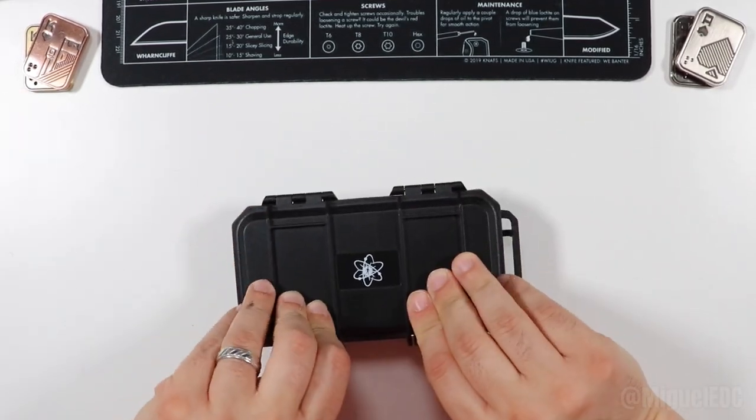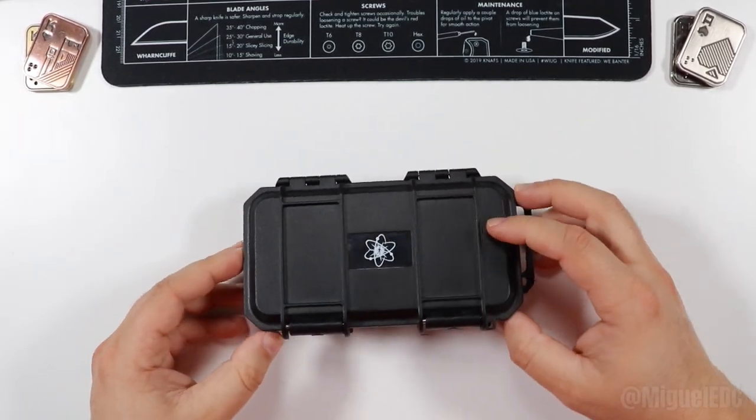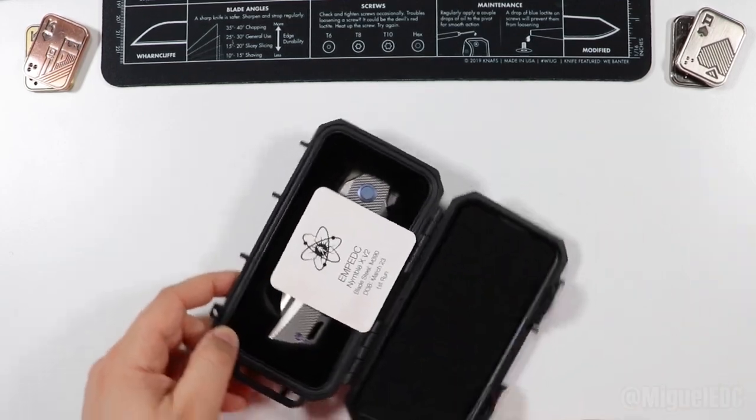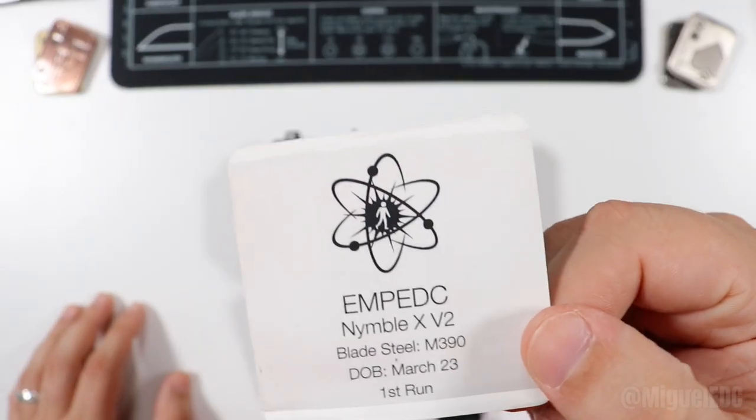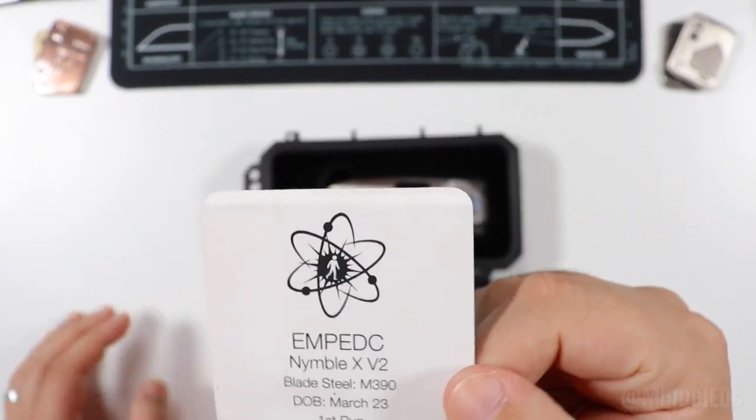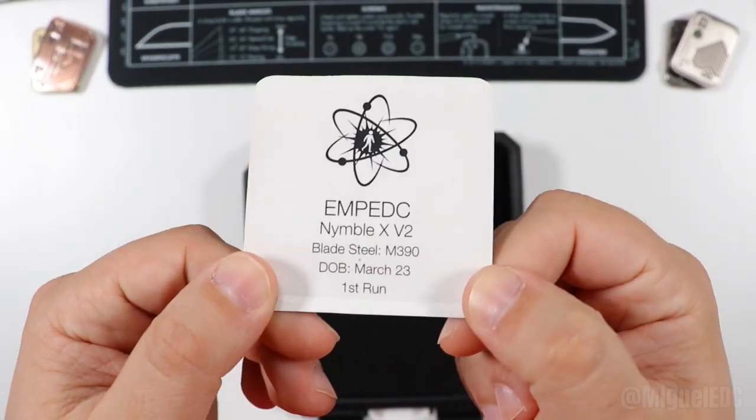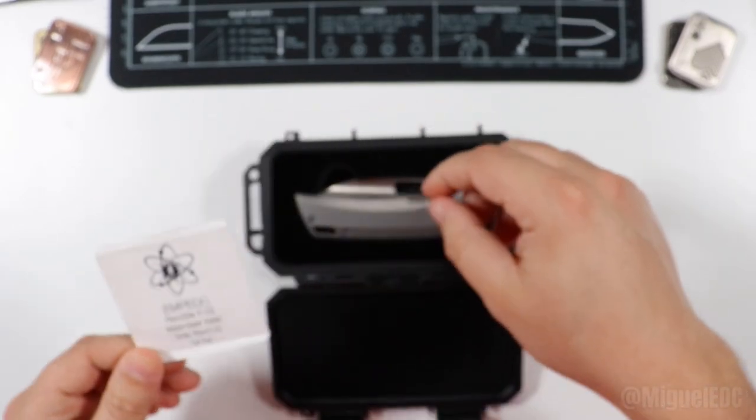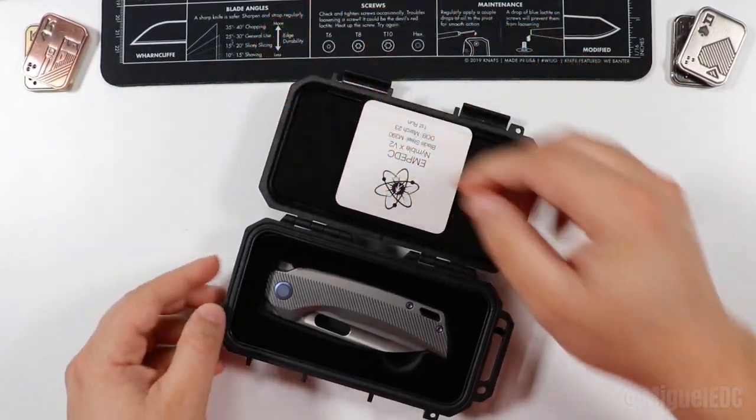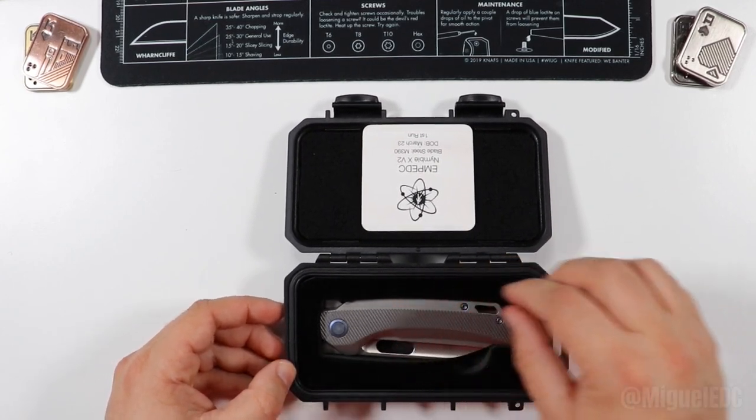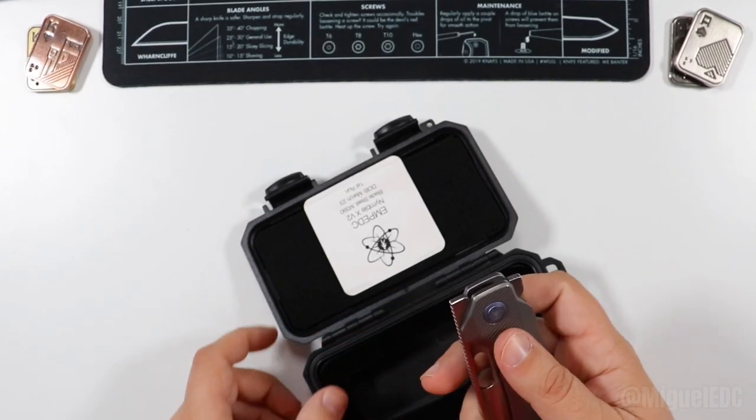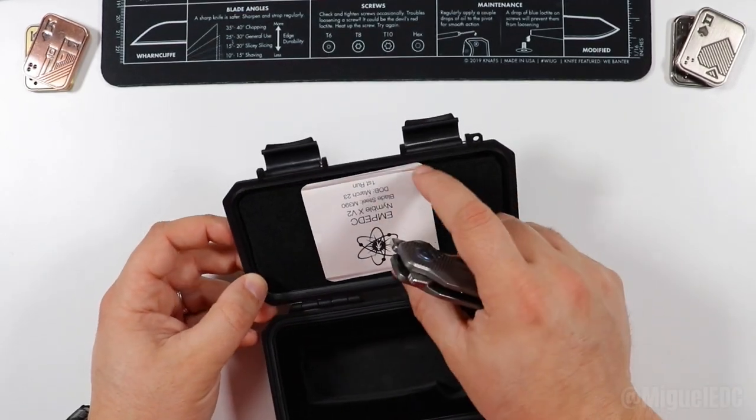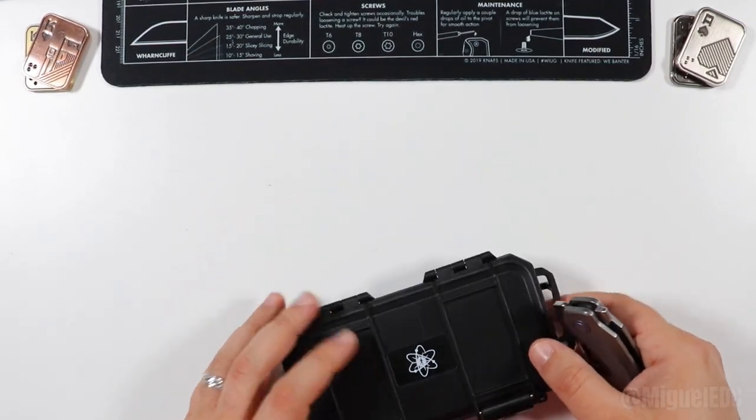So without further ado, open this guy up and here it is - the EMP EDC Nimble V2 with M390 steel. This one is from the first run back in March 2023. Holy moly, let me pull it out this way. Holy smokes, I'm gonna close this case for now and put it off screen.